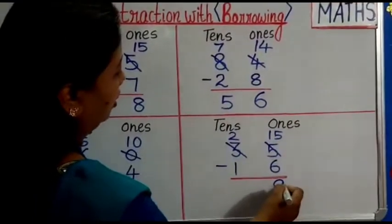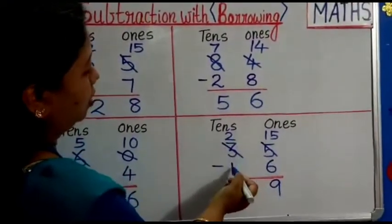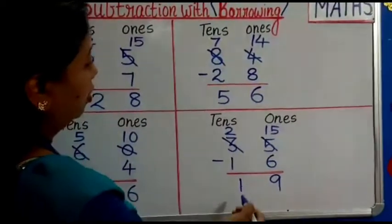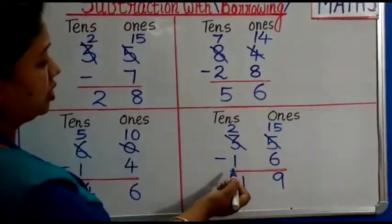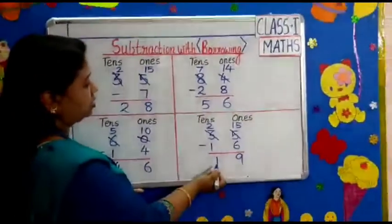15 minus 6 is 9. 2 minus 1 is 1. So 35 minus 16 is 19.